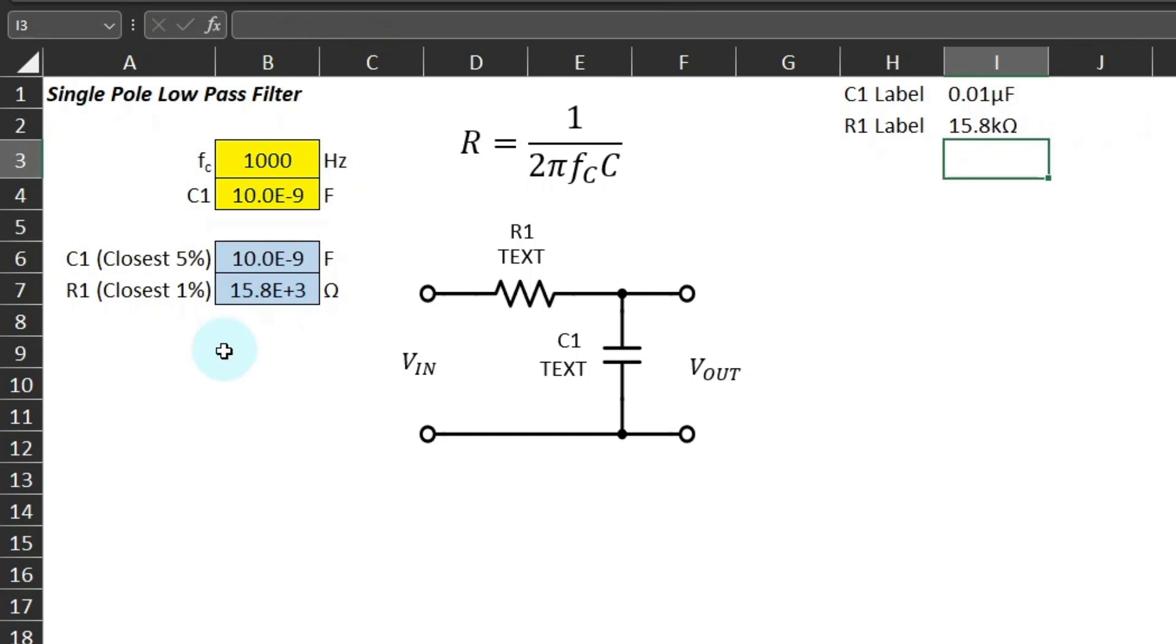Now click into the text box under R1 and type an equal sign in the formula bar and select the cell we made for the label for R1. Then do the same for the label for C1.